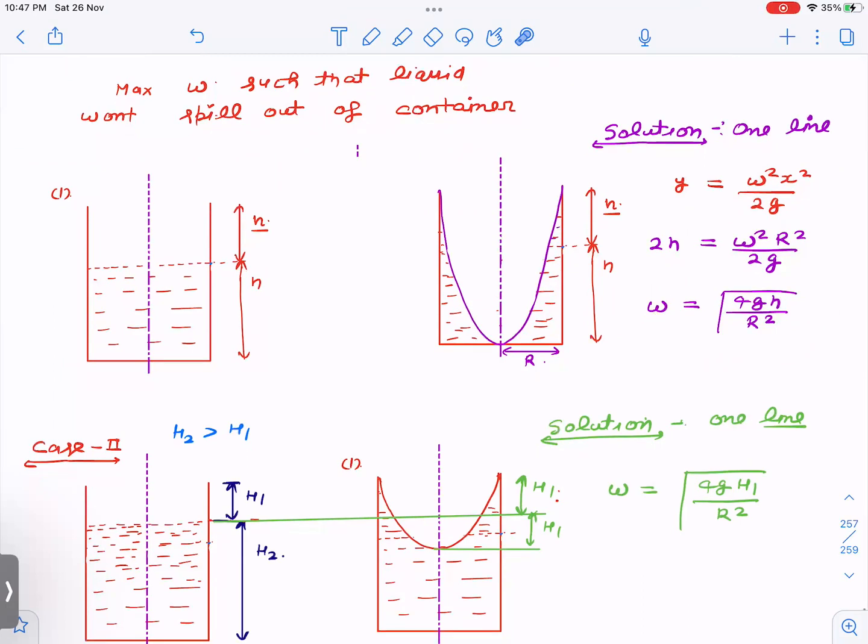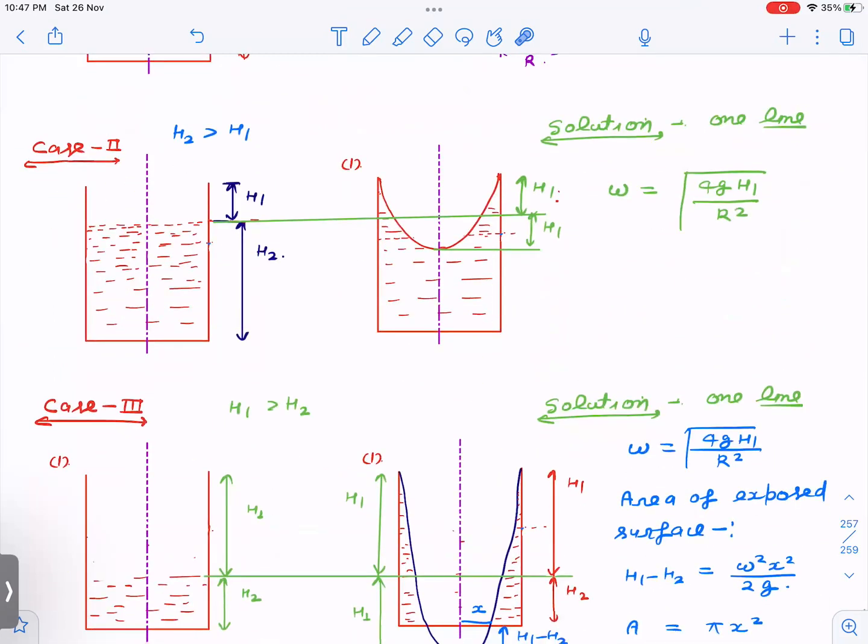Another case is when liquid is filled more than half. So this case. This is very easy. You can very easily visualize this. So again, max omega we are finding. Max omega means the topmost point would go here. So from original level, if it goes up by H1, it will go down also by H1. So profile becomes like this, same answer. So H is replaced by H1, same equations.